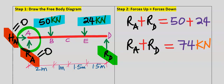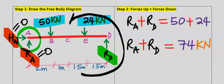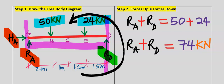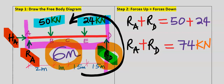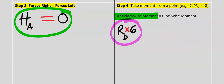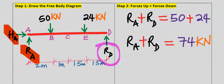The reaction force at point D causes the beam to turn anti-clockwise about point A. The moment is force multiplied by the perpendicular distance to point A, and this distance is 6 meters. So we have the reaction at D multiplied by 6 meters, added to the anti-clockwise moment.